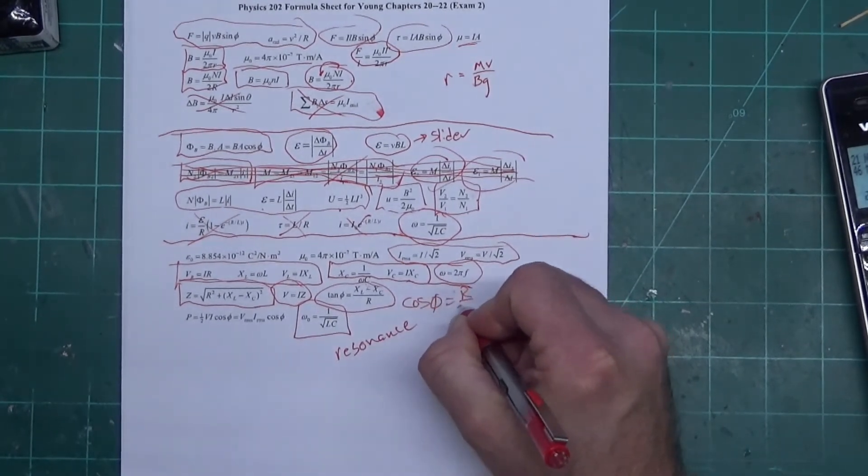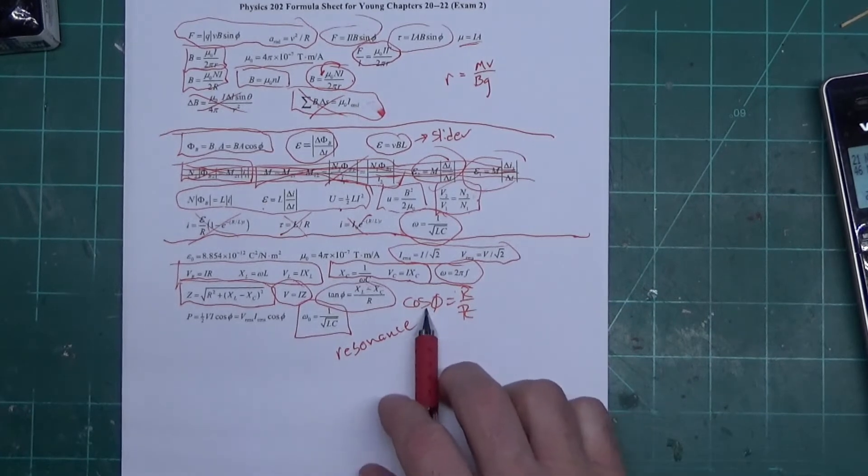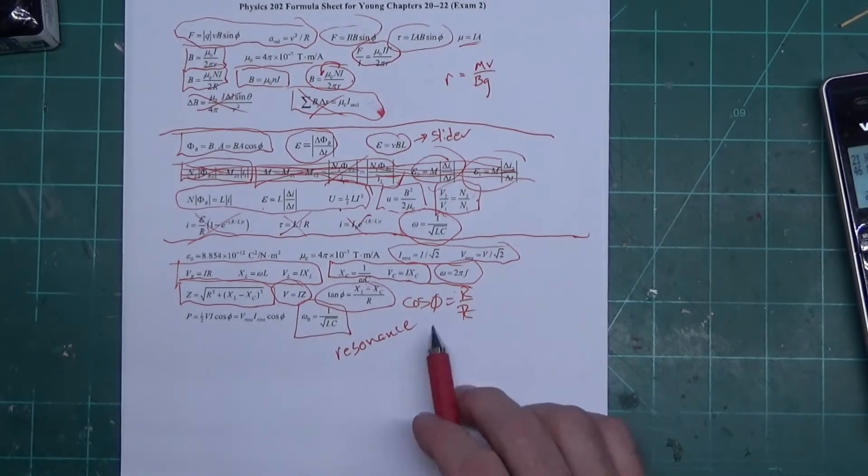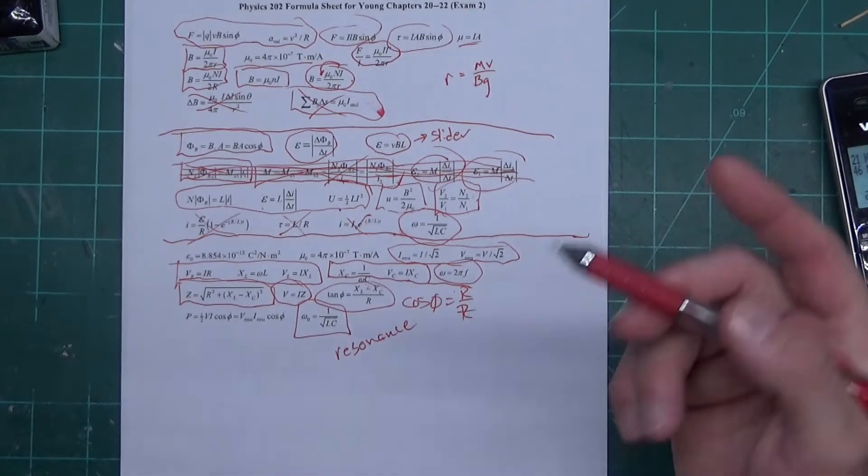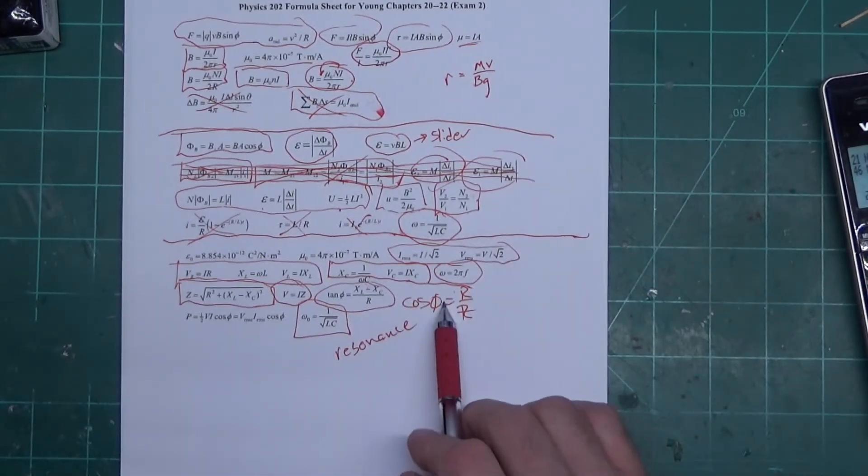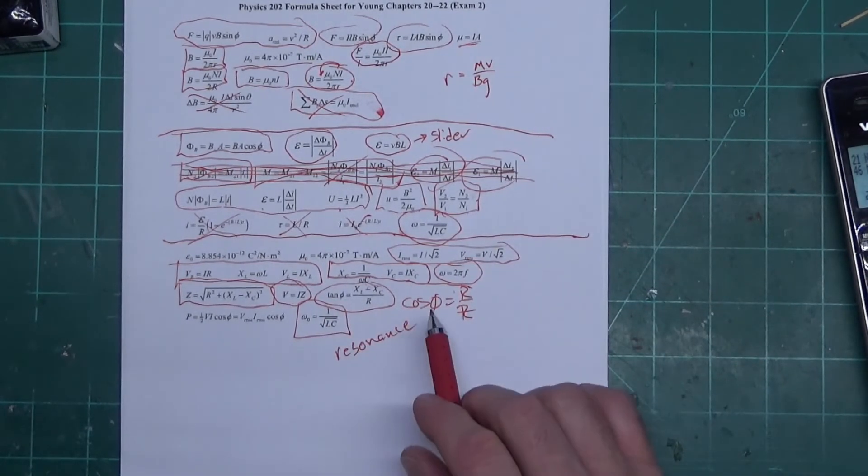I would rather use cosine phi is R divided by Z. This will give me phi, just like this will give me phi. Some teachers won't use this because there's some issues with leading and lagging that this won't show, but this does. As long as you're careful, you're okay with this one.